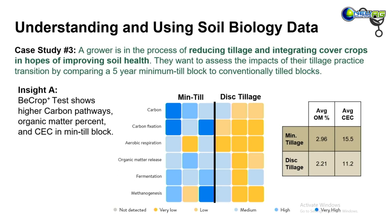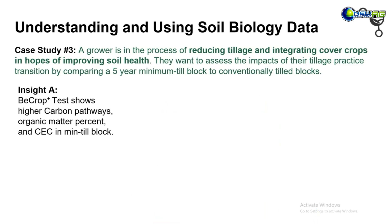They also pulled Crop Plus tests and got information on organic matter percent and cation exchange capacity. Sure enough, those levels were lower in the disc-tillage field than in the min-till field, confirming some positive impacts on carbon pathways, organic matter, and CEC.